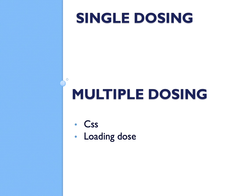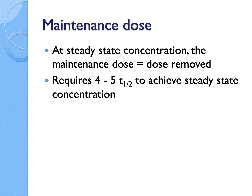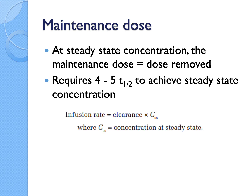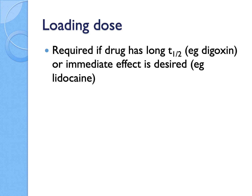For multiple dosing, you look at CSS (steady-state concentration). A loading dose may be needed for drugs with very long half-lives when you want the effect to kick in immediately — you give a large first dose followed by smaller maintenance doses. For maintenance dosing via IV infusion: infusion rate = CL × CSS. For oral regimens: dose/tau = CL × CSS / F, where tau is the dosage interval and F is bioavailability.